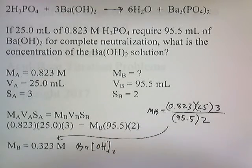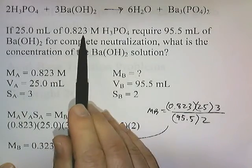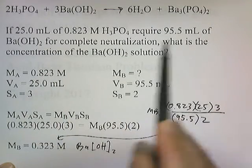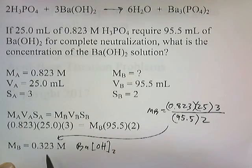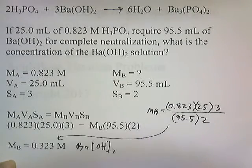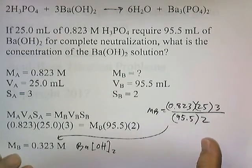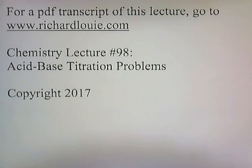So the concentration of barium hydroxide must be 0.323 molar in order to neutralize that volume of phosphoric acid at that concentration. For a PDF transcript of this lecture, go to www.richardlouis.com. This has been chemistry lecture number 98, Acid-Base Titration Problems.